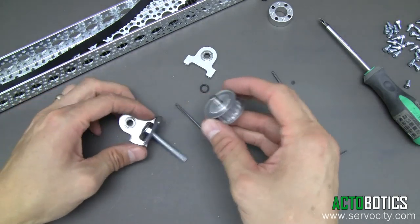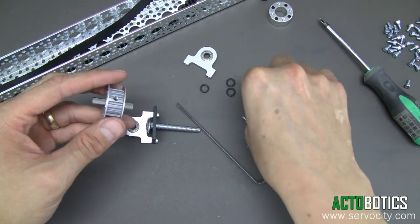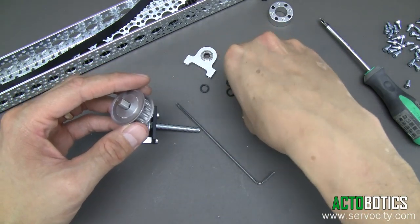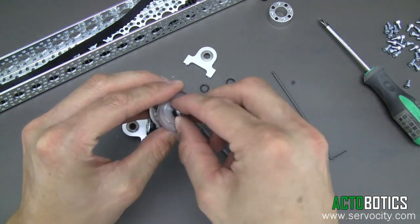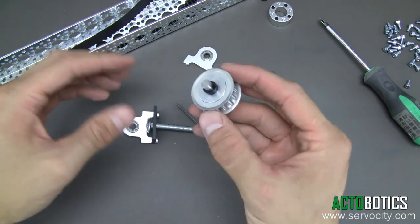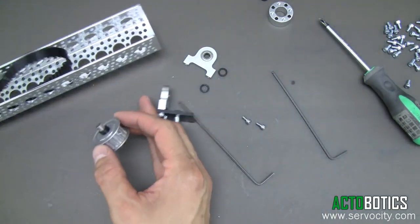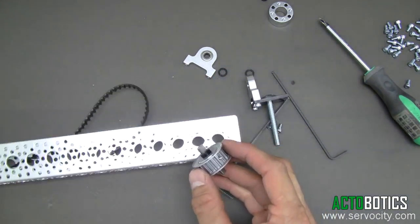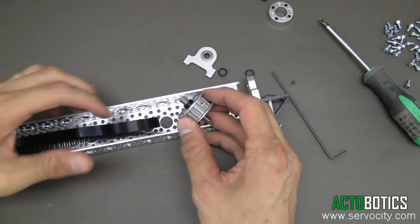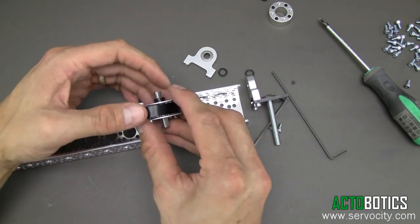Next, grab two of these little black spacers. Two are going to go on either side of the shaft, one on this side and a second one there. Next we're going to run this through the belt and turn it this way.